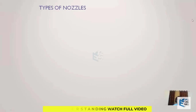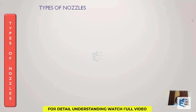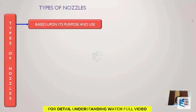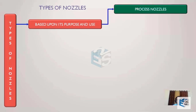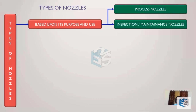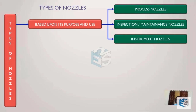The nozzles can be differentiated based upon their purpose and use. Based on this classification, there are three types: the process nozzle, the inspection or maintenance nozzle, and the instrument nozzle. So based upon its purpose and use, nozzles are classified as process nozzles, inspection nozzles, maintenance nozzles, and instrument nozzles.